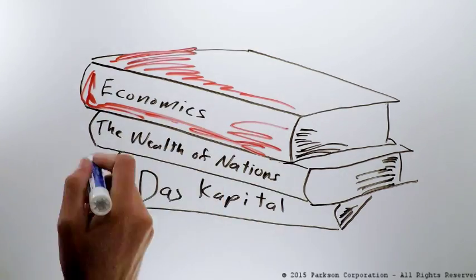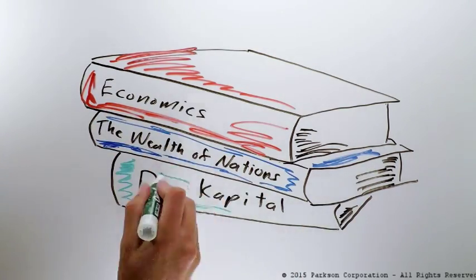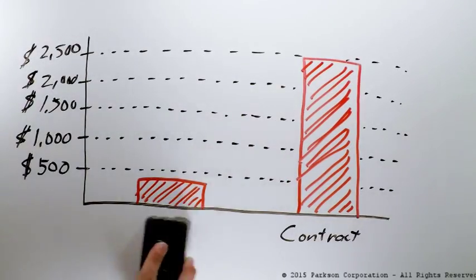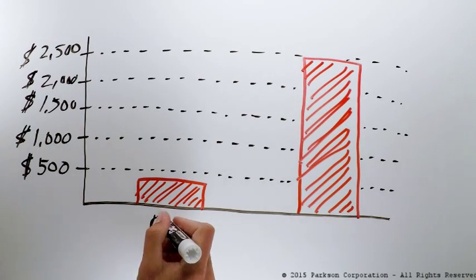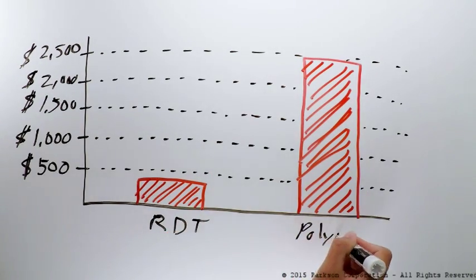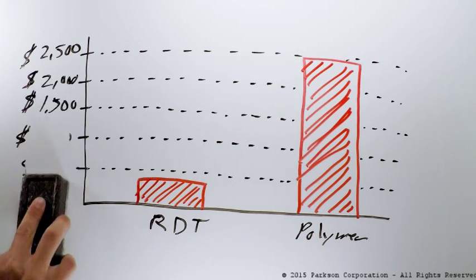So what does this have to do with sludge thickening? Well, if we take a look back at the bar graph we drew for the cell phone costs, then draw a similar bar graph for the life cycle cost of a sludge thickener, we'll see an uncanny similarity.